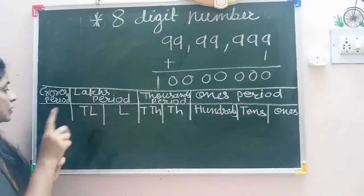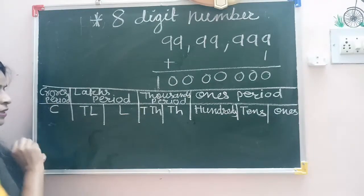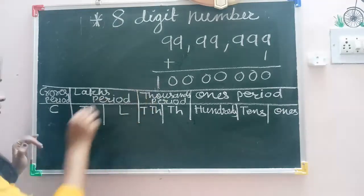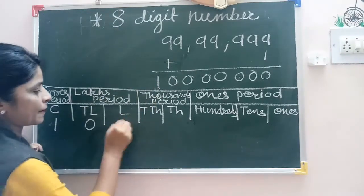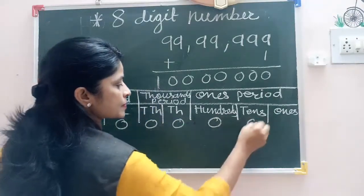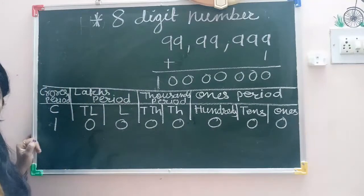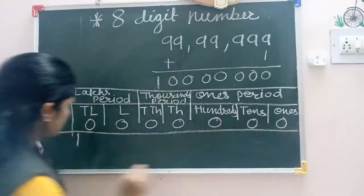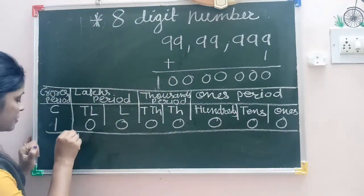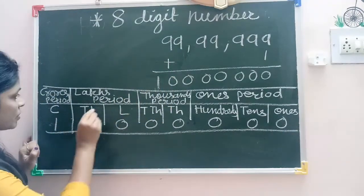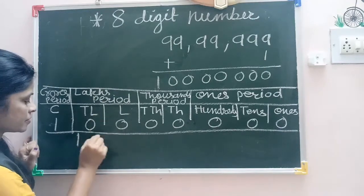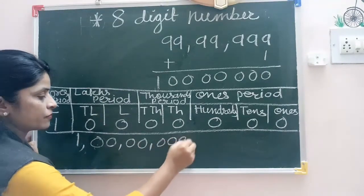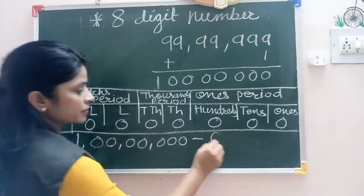In the crore period, we are going to learn about the crore place. Now the smallest 8-digit number is 1 crore. Now, by putting the comma, we will separate the periods. Now we can read it as 1 crore.